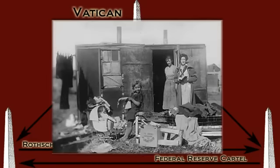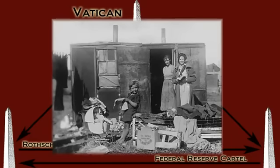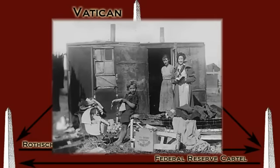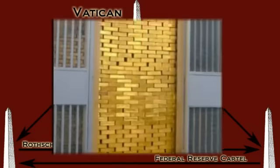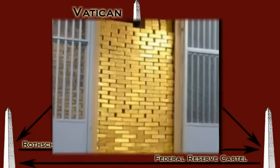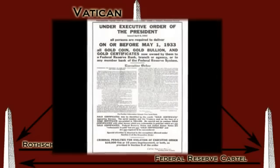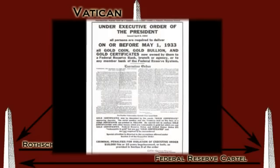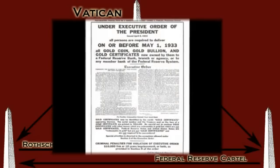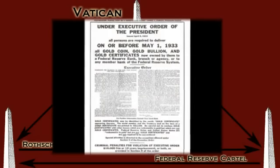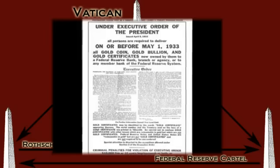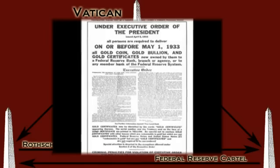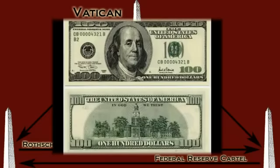Having reduced the society to squalor, the Federal Reserve decided it was time to strip the people of all the remaining wealth. Under the pretense of ending the Depression came the 1933 gold seizure. Under the threat of imprisonment for ten years, everyone in the United States had to turn in their gold coins, bullion, and gold certificates. By the end of 1933, the gold standard was abolished and the people received a Federal Reserve note, which is not backed by anything.